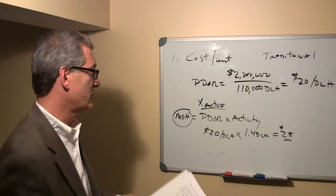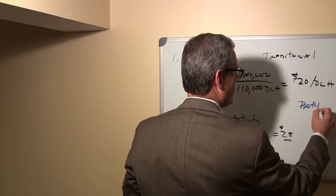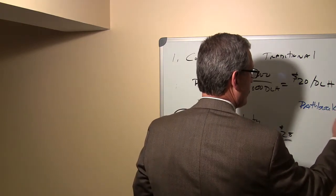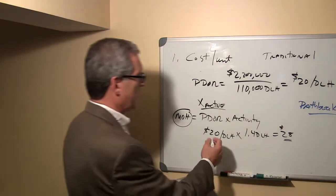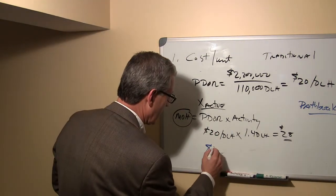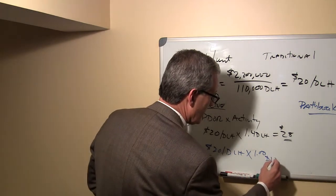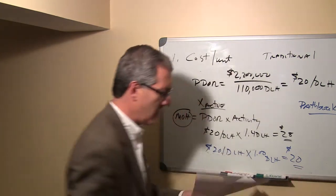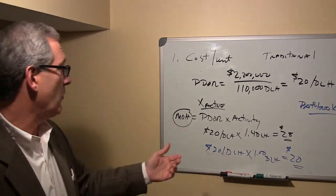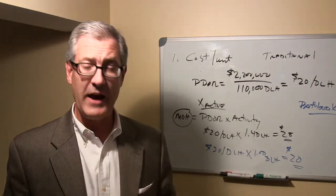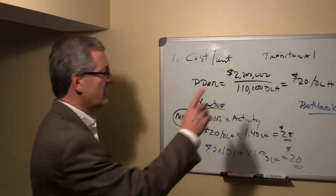When we look at the PathBreaker product, to calculate the manufacturing overhead cost per unit, we use the same formula: predetermined overhead rate times activity. In that case, we're looking at $20 per direct labor hour, but for this product it only takes one direct labor hour. Therefore, the manufacturing overhead per unit for PathBreaker using the traditional approach is $20. Adding that to direct materials and direct labor, you have a cost per unit of $84. That's the cost per unit under the traditional approach.